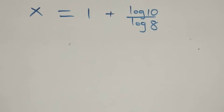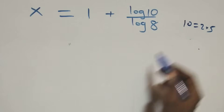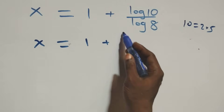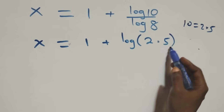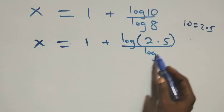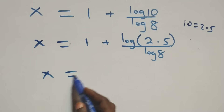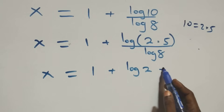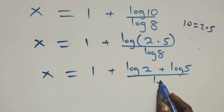From here we can write 10 as 2 times 5, which gives x equals 1 plus log(2×5) over log 8. Applying the product law again, this becomes x equals 1 plus (log 2 + log 5) over log 8.